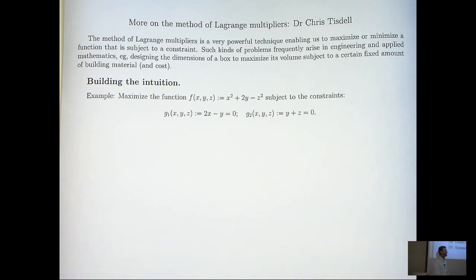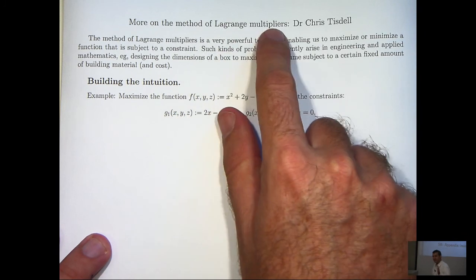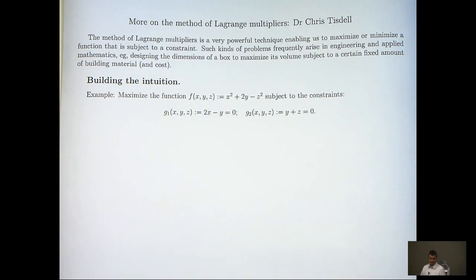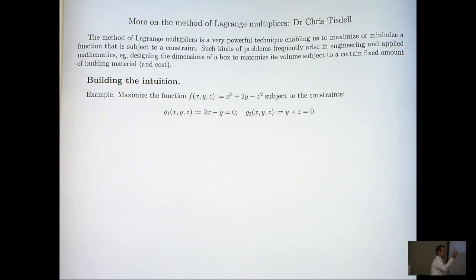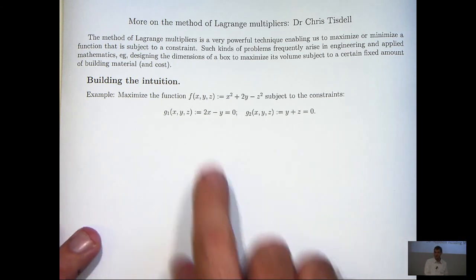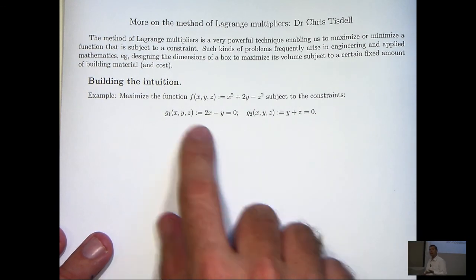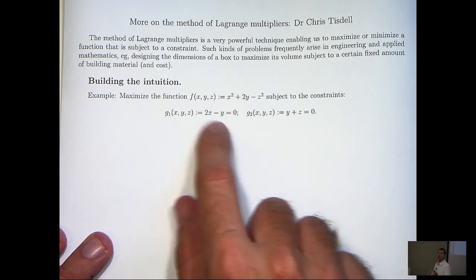Hi again everyone. In this video we're going to continue our look at the method of Lagrange multipliers. The example I'm going to discuss in this video is a little bit more abstract, a little bit more complicated than the regular examples you see. In particular, the example I'm going to discuss has two constraints rather than one.